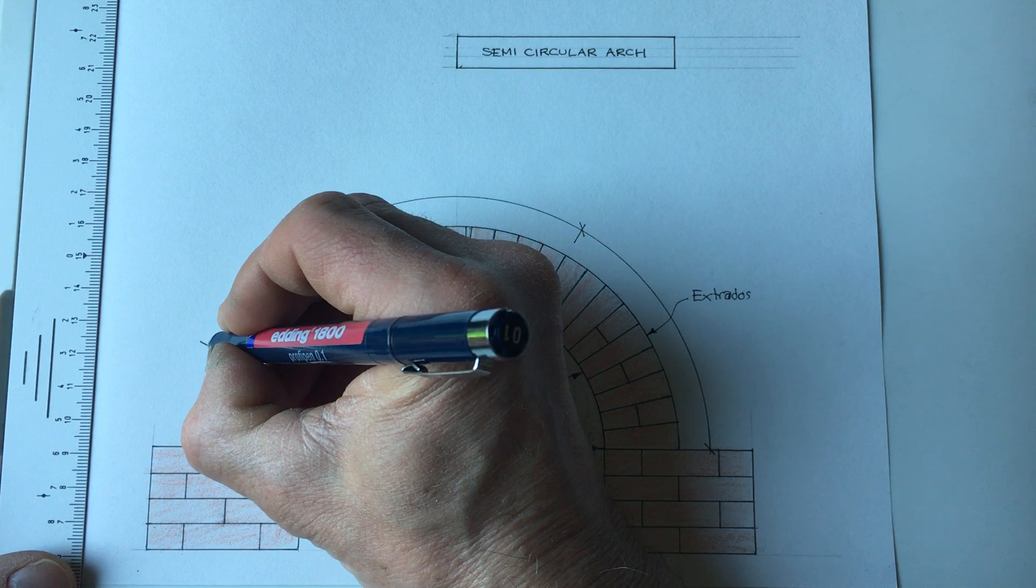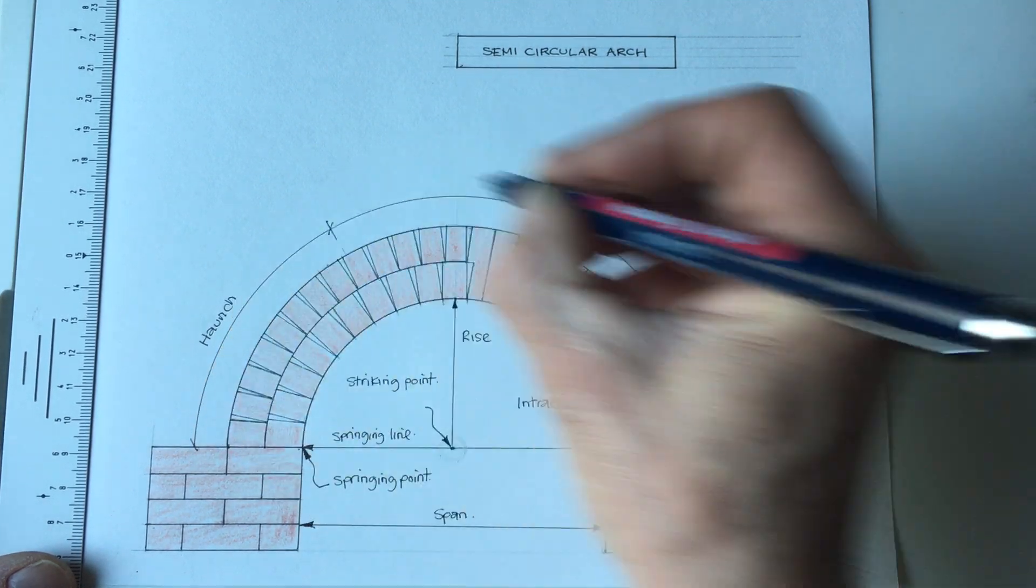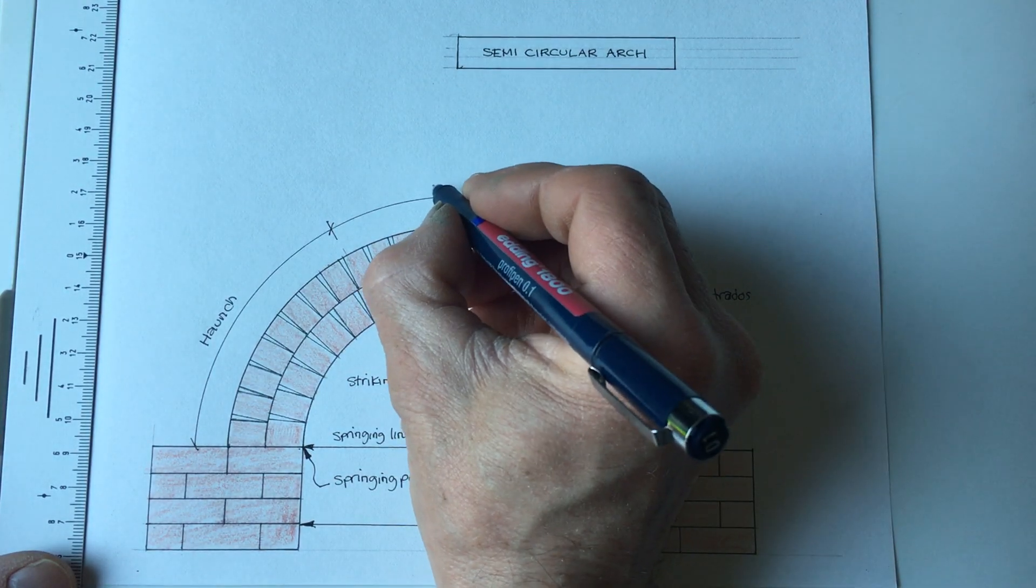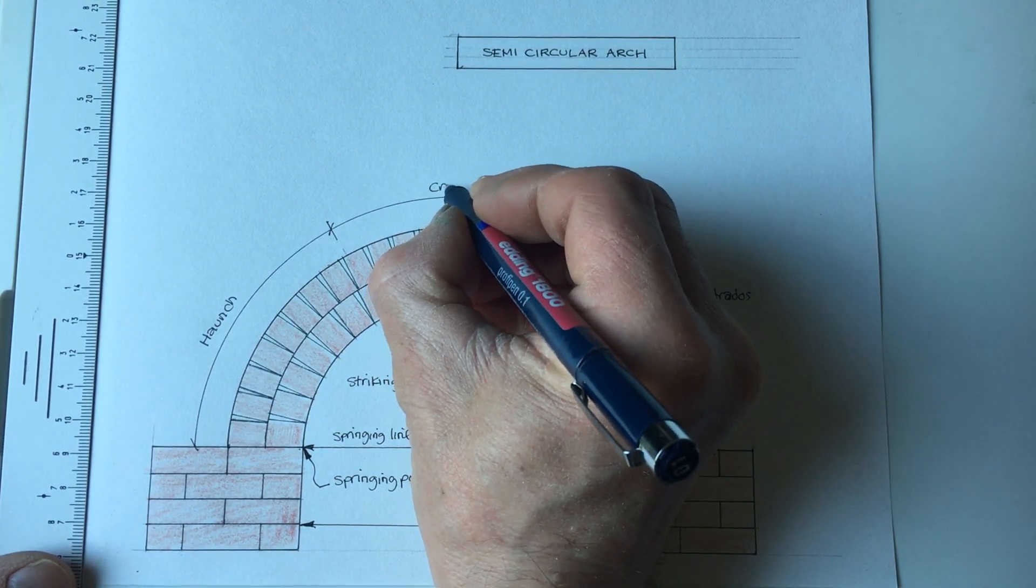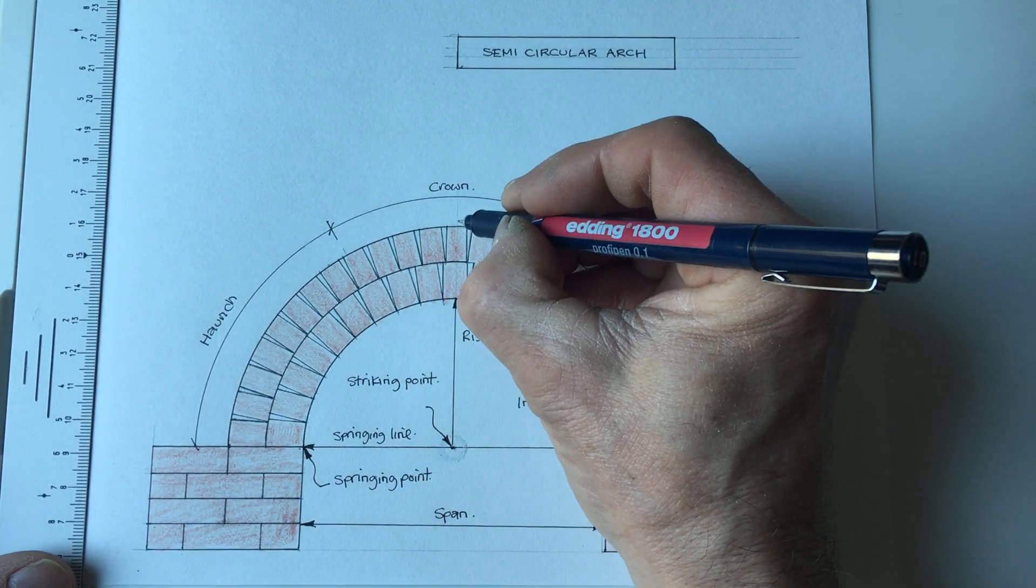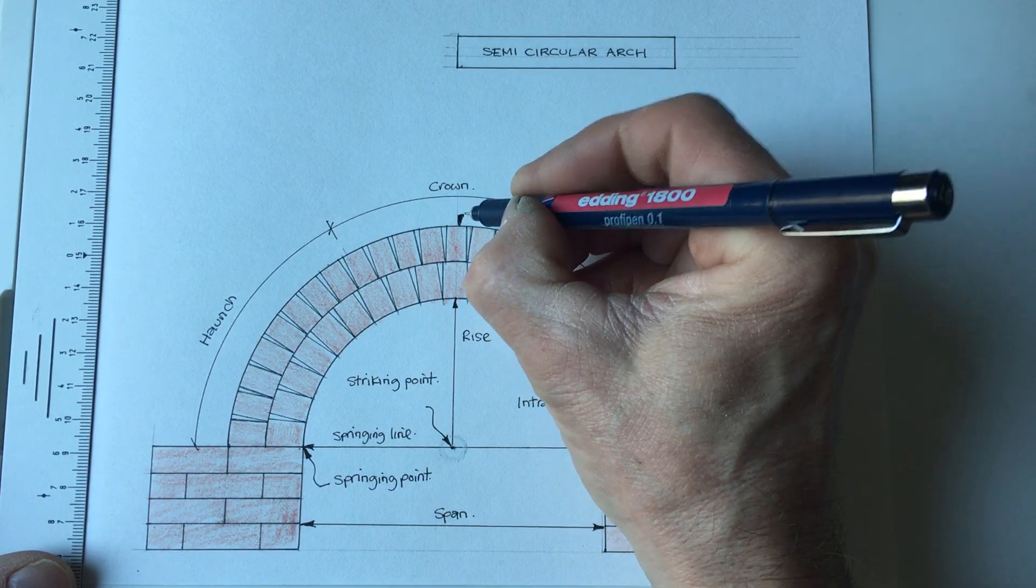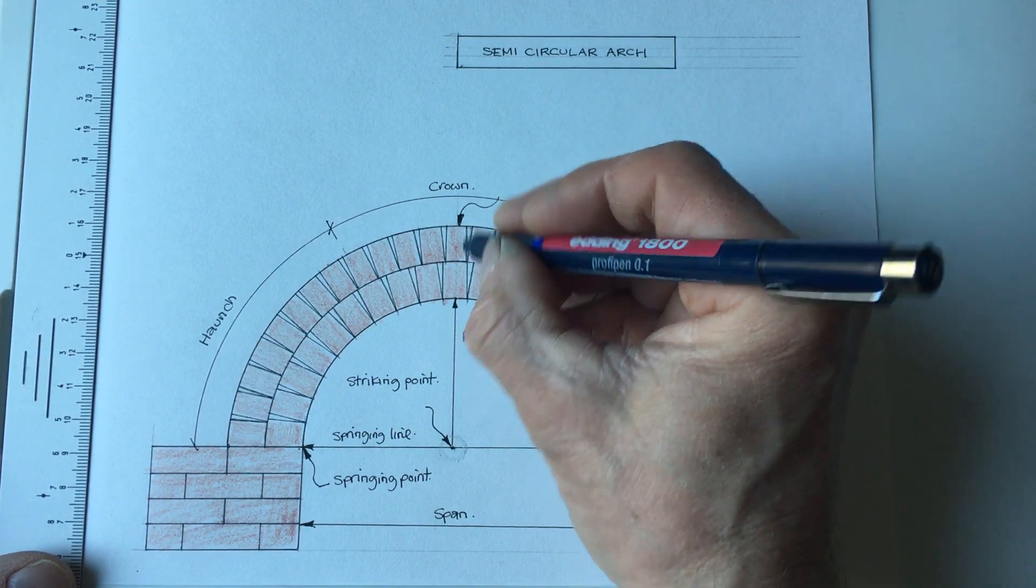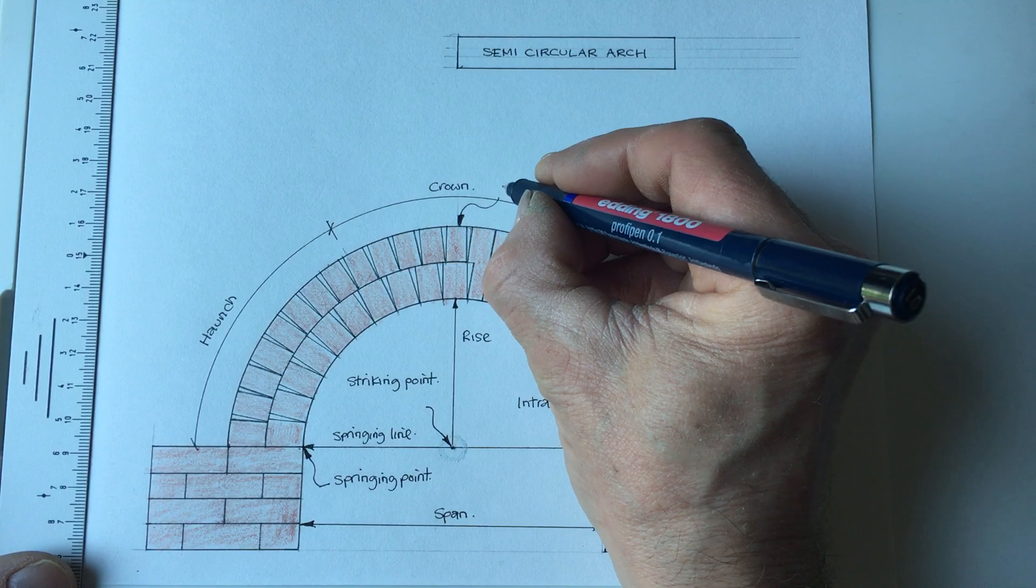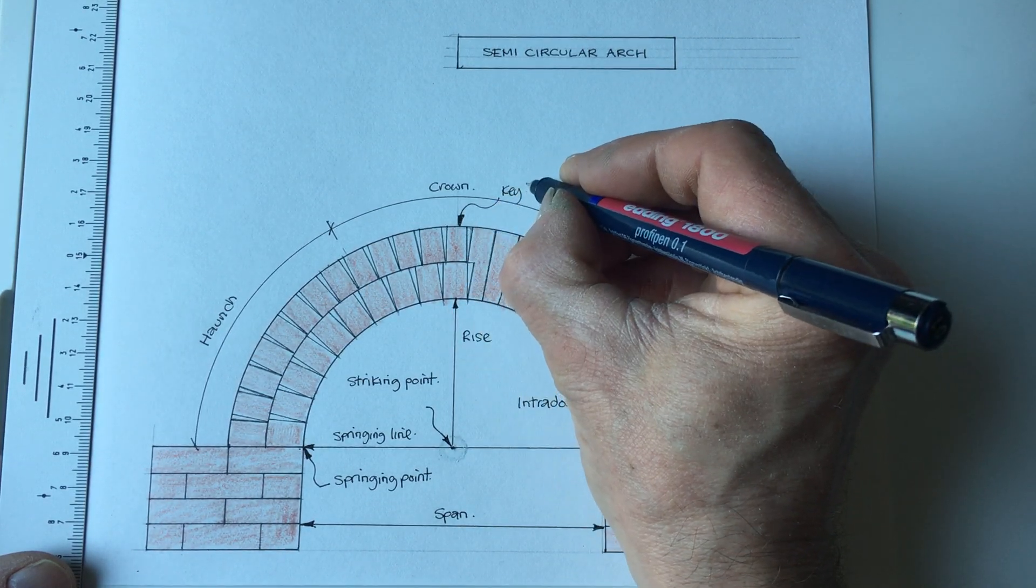So to the other side, and the top third is called the crown. Here we would have in the center a key brick—not always a key brick, sometimes there's a joint there—but where we do have a center brick, that is called the key brick.